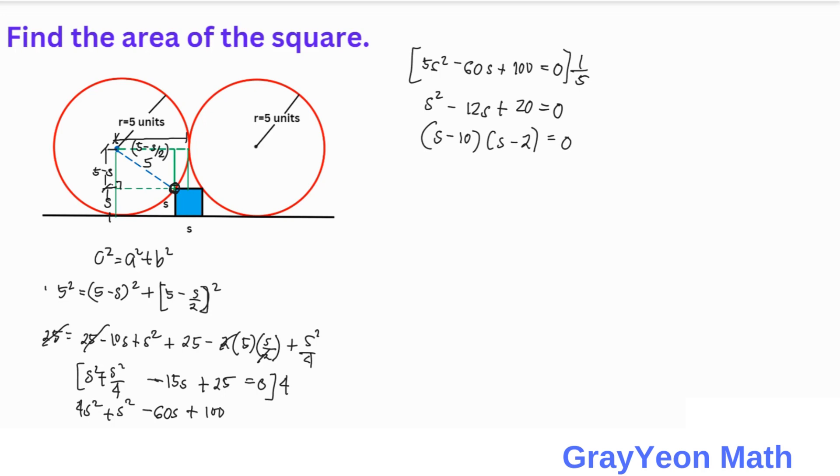Then we have two solutions: S minus 10 equals 0 and S minus 2 equals 0. Checking, if S equals 10, then 5 minus S equals 5 minus 10, which is negative 5. This is invalid because there is no negative distance.